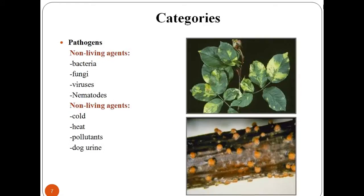Let us have a look at pest categories that are classified according to their related nature. Pathogens cause losses due to disease, which is variable and directly dependent upon the incidence of disease. They are basically bacteria, fungi, viruses, and nematodes.